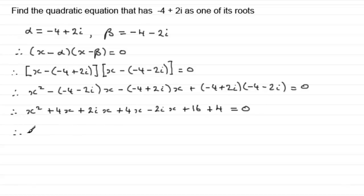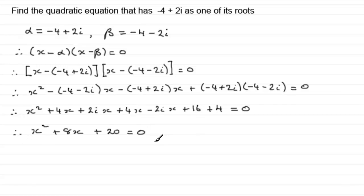Grouping together all like terms: x squared; 4x plus 4x is 8x; 2ix minus 2ix cancels to 0; and 16 plus 4 is 20. So that gives us x squared plus 8x plus 20 equals 0. Hopefully you've got that, and that gives you an idea of how we can work out quadratic equations once we know one of the complex roots — the other being the complex conjugate of it.